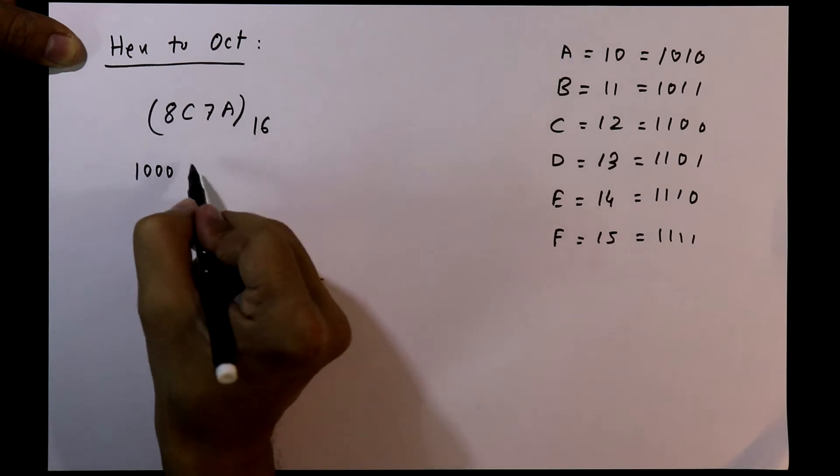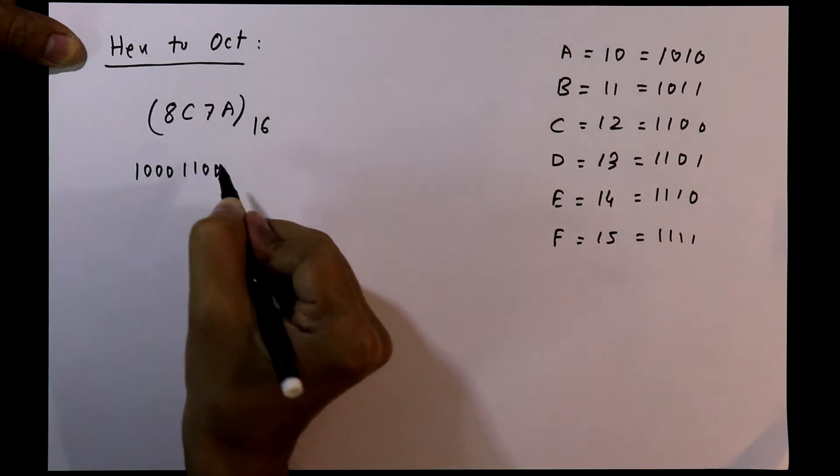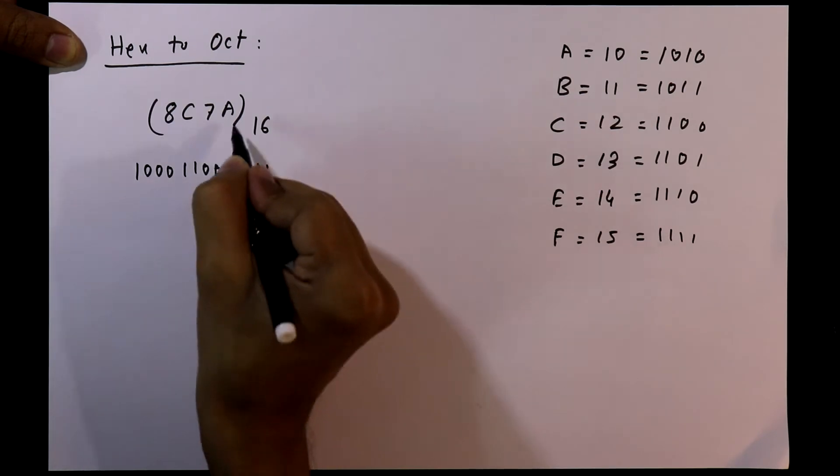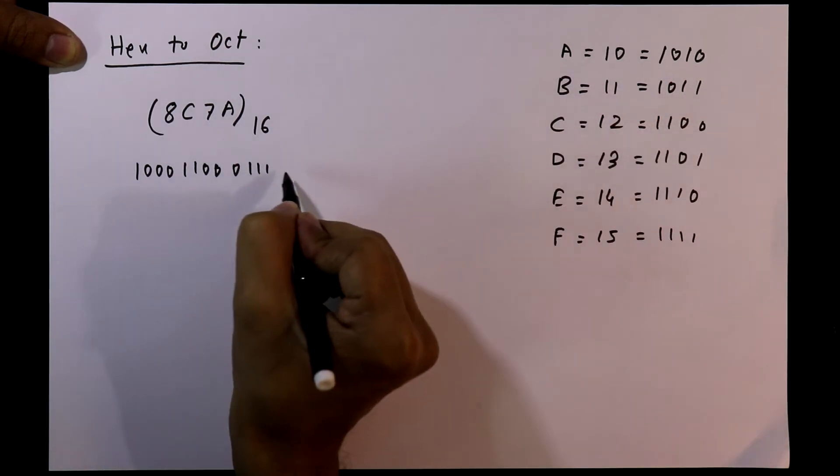For C it is 1100. 7 is 0111, and for A it is 1010.